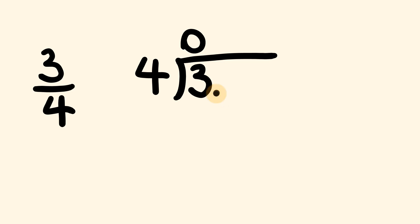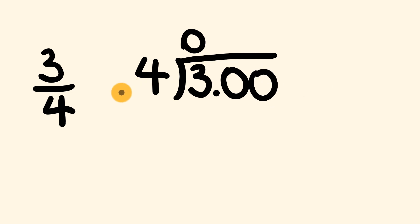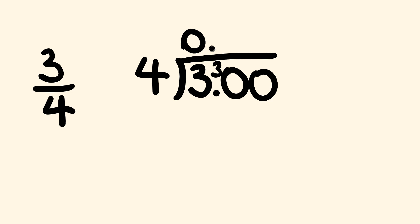And this is where the decimal starts. By placing a decimal after the 3, we can continue this division problem, because we can put zeros here — as many as we need — and it doesn't affect the value of the 3. So the 3 went in 0 times; we carry that 3 across. The other trick is where the decimal place goes here, we also put the decimal place in our answer. How many times does 4 go into 30? 4 goes into 30 seven times — 7 times 4 is 28, so we have 2 remainder.